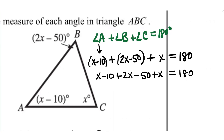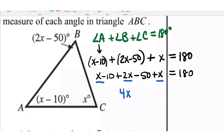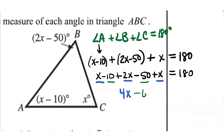Let's take a look together. We're going to start by combining like terms on the left-hand side. I see that I have three different terms with x's in them — what do those add up to? 4x. And now I have two terms that don't have x's. What do those add up to? Negative 60. They were both negatives — be careful there.